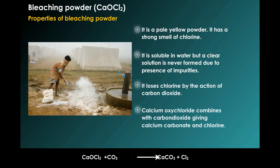CaOCl₂ (calcium oxychloride) combines with CO₂ (carbon dioxide), giving CaCO₃ (calcium carbonate) and Cl₂ (chlorine).